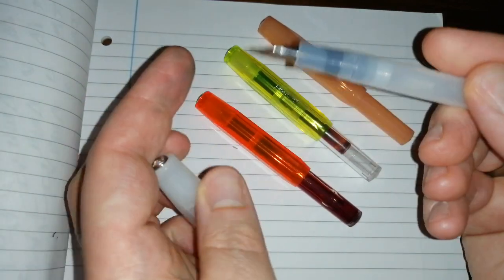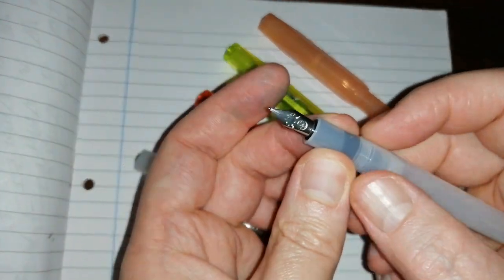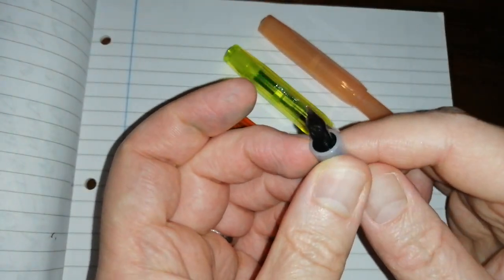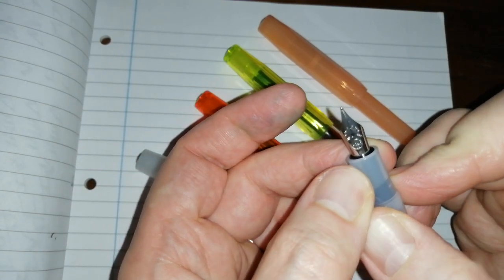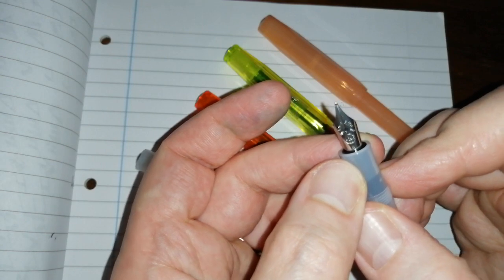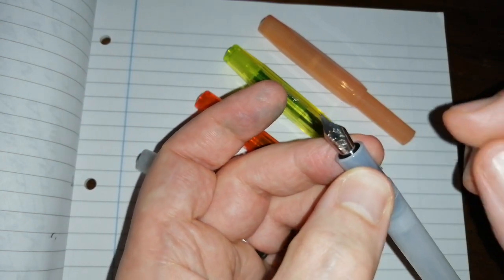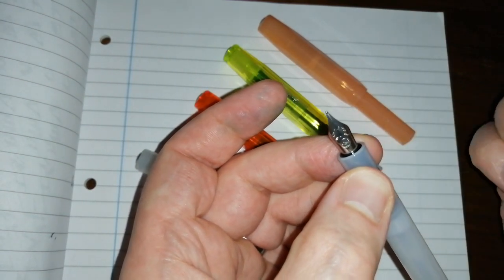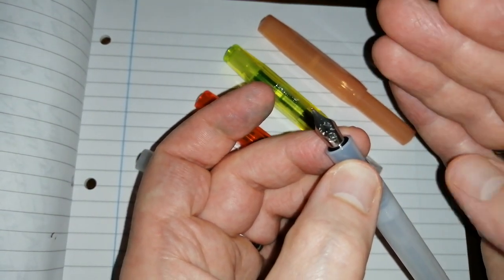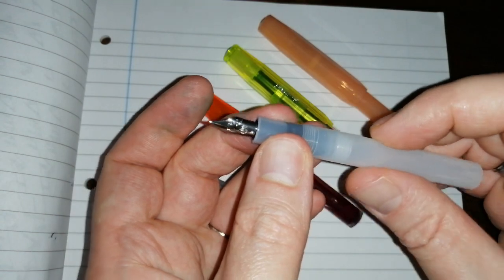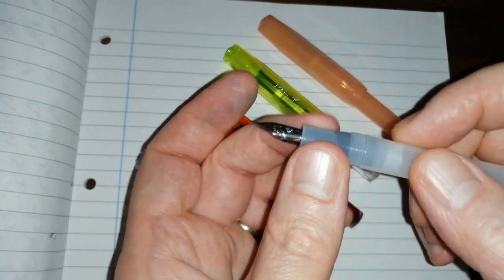So unscrew that. We have a section where the nib and the black feed, plastic feed, fits in. This one is a medium. The nibs, the steel nibs, are available in extra fine, fine, medium, broad, and double broad. So you've got a lot of nib options with these pens.